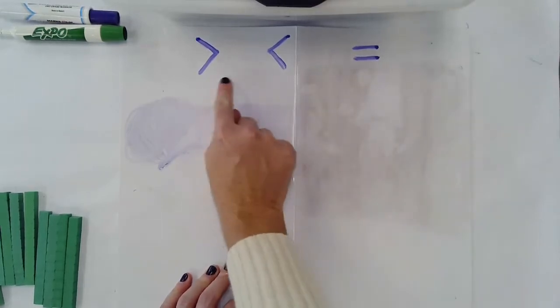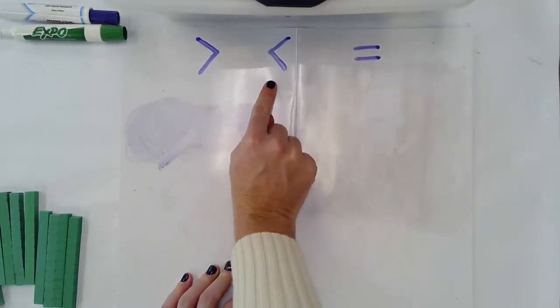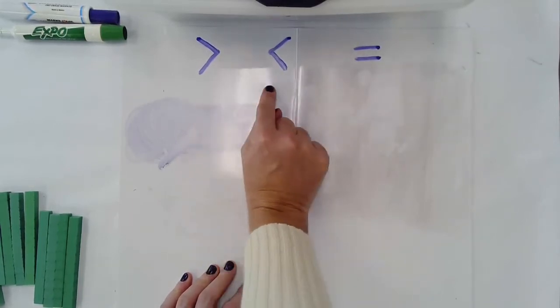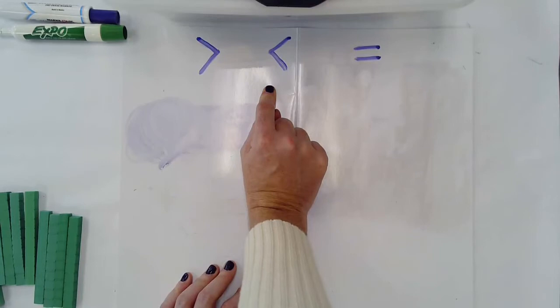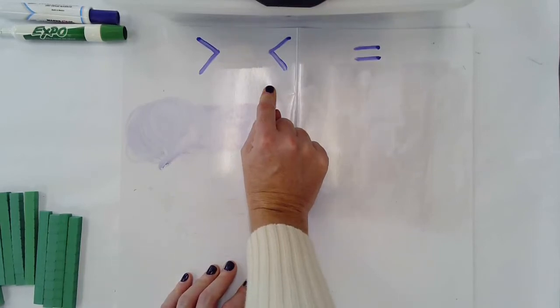So these might be confusing as to when we use them, so just remember think about these signs as a hungry alligator's mouth that is always open to eat the greater number.